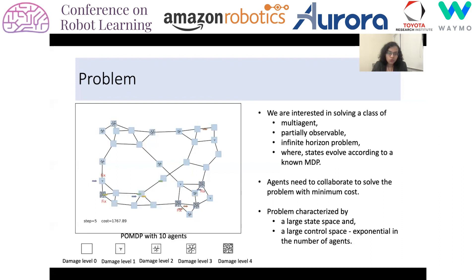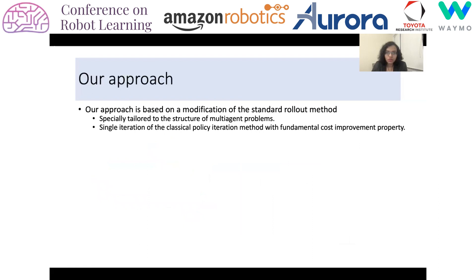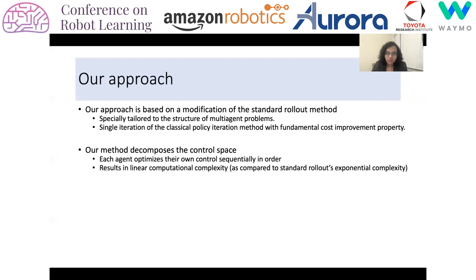Now I'm going to talk about our approach at a high level. Our approach is based on a modification to the standard rollout method which is specially tailored for the multi-agent problem structure. The standard rollout can be considered as a single iteration of the policy iteration method which has a fundamental cost improvement property. The standard rollout achieves this via an exhaustive optimization over all possible controls given by all agents, hence it incurs exponential computational complexity. Our method improves its computational complexity using a sequence of optimizations once per agent, hence it obtains linear computational complexity in terms of the number of agents, while giving similar cost performance as the standard rollout method.